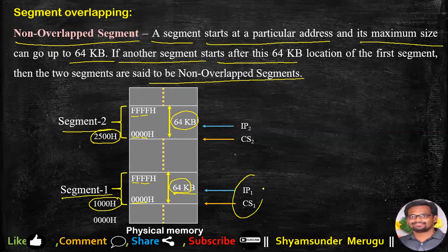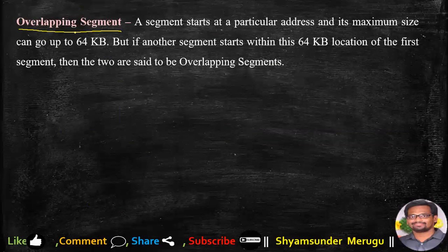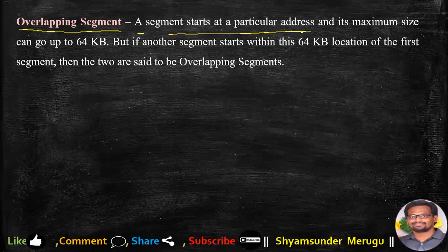Now let us consider overlapping segments. Overlapping means the segmented memory areas overlap. If a segment starts at a particular address with 64 KB size, but another segment starts within the 64 KB location of the first segment, then the two are said to be overlapping segments.